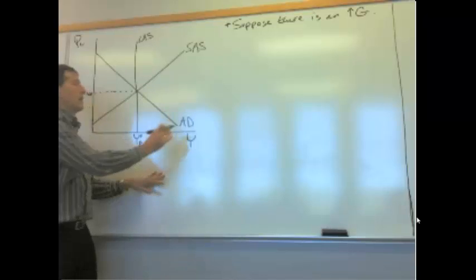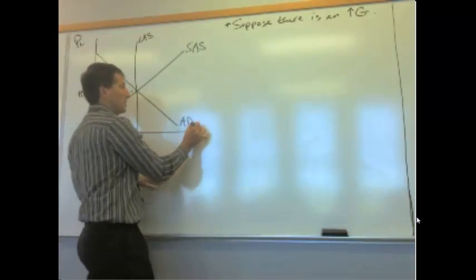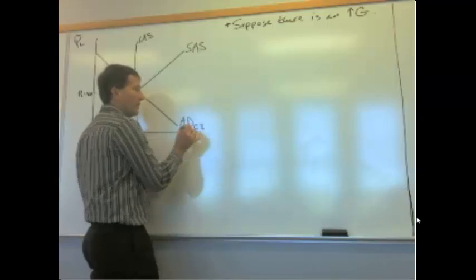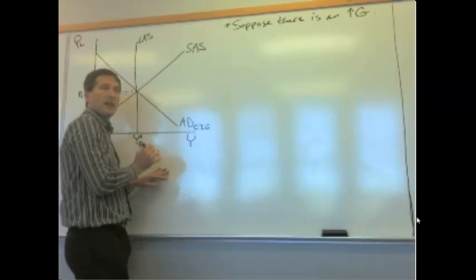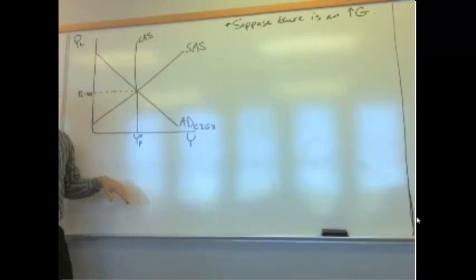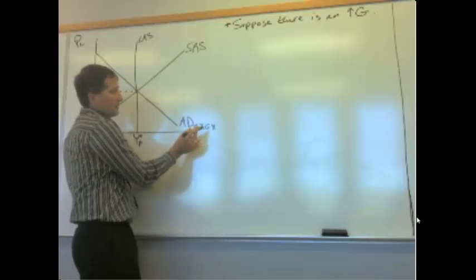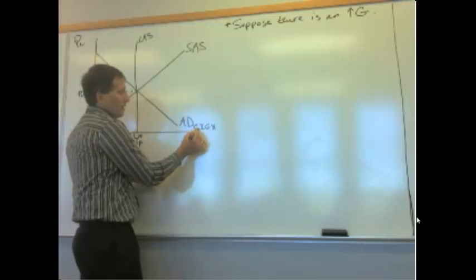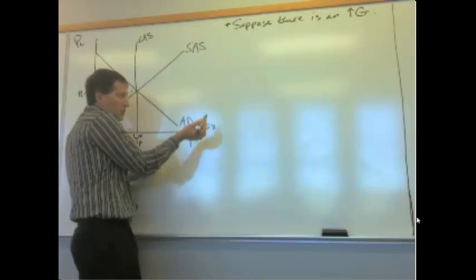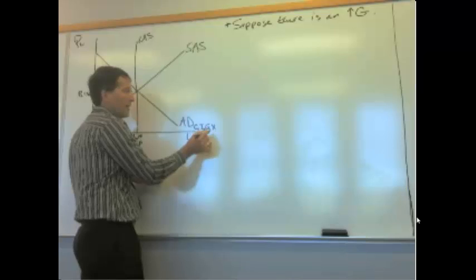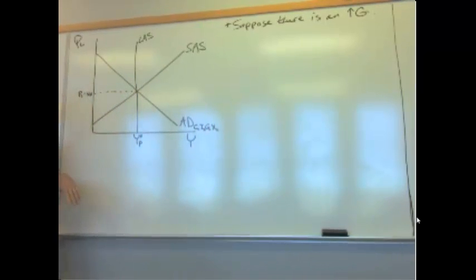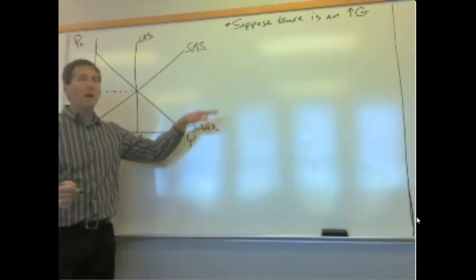And again, our current status quo is there's a certain level of consumption, a certain level of investment, a certain level of government spending, and a certain level of exports. So if you want to put a little subscripts there, and maybe put a little zero subscript, consumption's at some level, investment's at some level, government spending's at some level, and net exports is at some level.